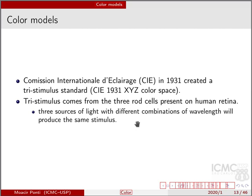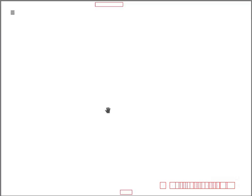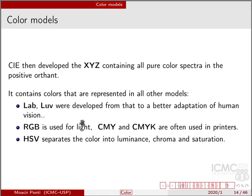The idea is that because we perceive color as a combination of three wavelengths, the color model they wanted to propose was also designed as that. In the beginning they used the direct RGB values, however the problem with directly using RGB is that we cannot represent those RGB values only on the positive orbit of a color space. So then this commission developed the XYZ system that contains all pure color spectra in the positive orbit.